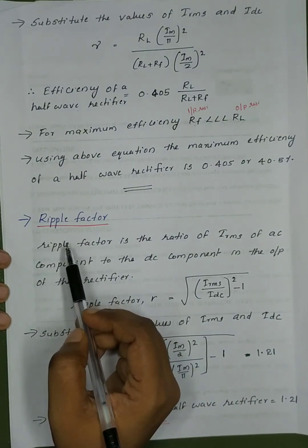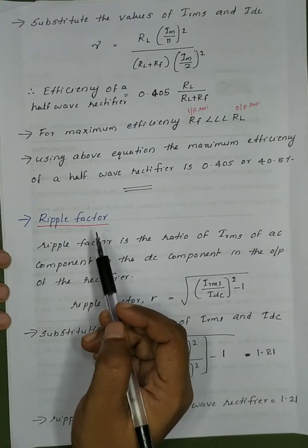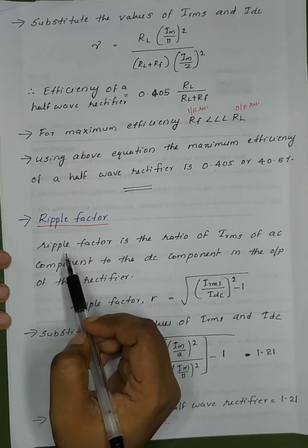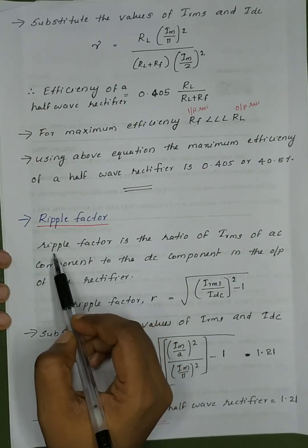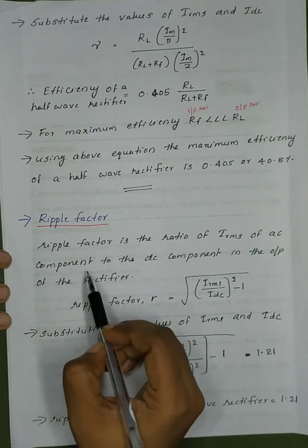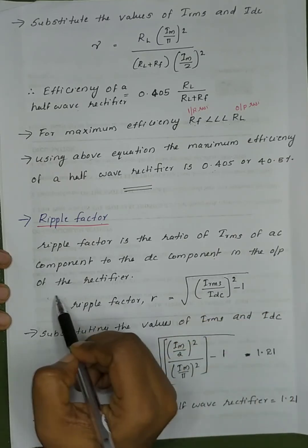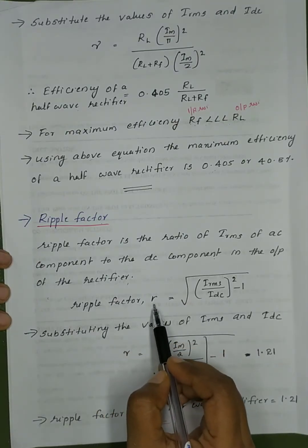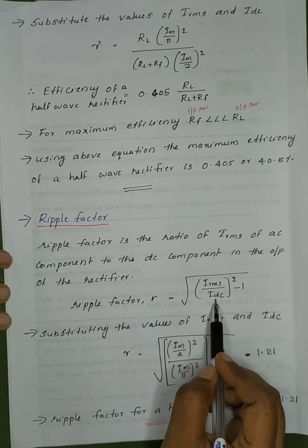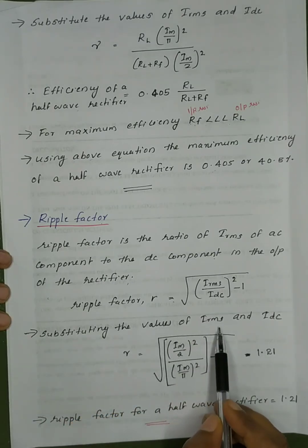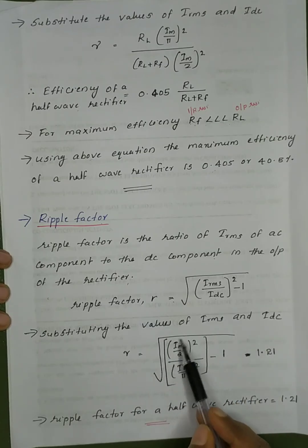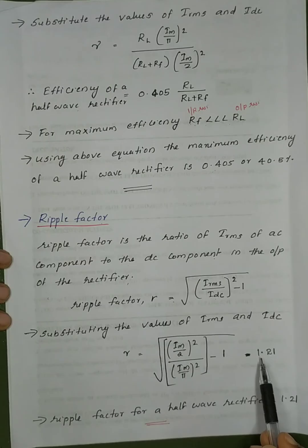Now, ripple factor. What is the ripple factor? We know that we have input AC and output DC, but when we have output DC we need to account for the AC component. Ripple factor is the ratio of IRMS of the AC component to the DC component in the output of the rectifier. Ripple factor R equals the square root of (IRMS/IDC)² minus 1. Substituting the values of IRMS and IDC, we get R equal to 1.21. The ripple factor of a half-wave rectifier is 1.21.